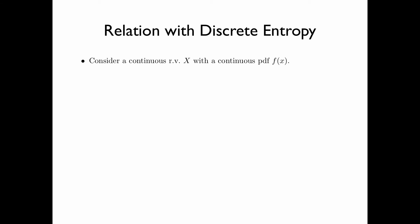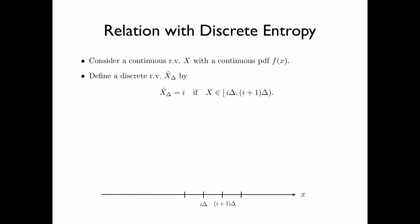Now we discuss the relation between differential entropy and discrete entropy. Consider a continuous random variable x with a continuous PDF f(x). Define a discrete random variable x̂_δ, which takes the value i·δ if the random variable x is in the interval [i·δ, (i+1)·δ]. Basically, we divide the x-axis into intervals of length δ. In other words, x̂_δ is a quantization of the continuous random variable x with resolution δ.